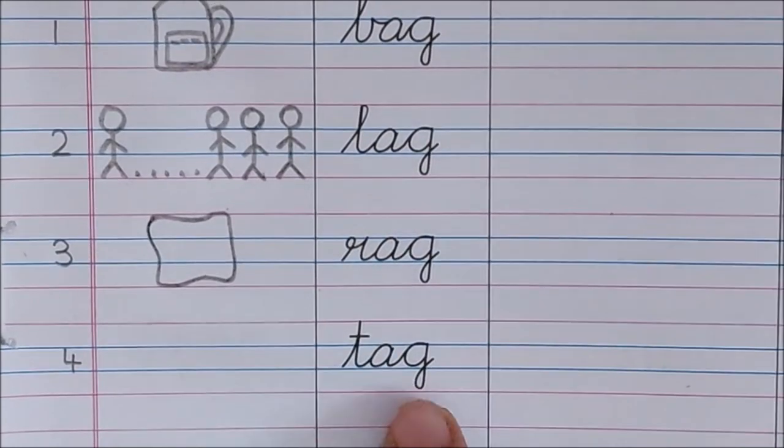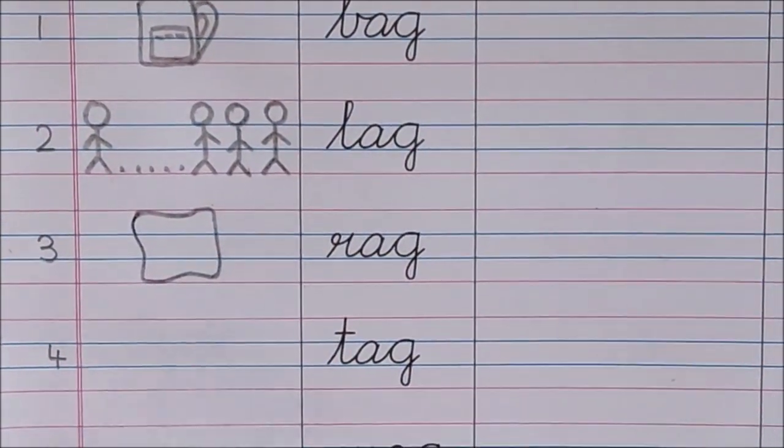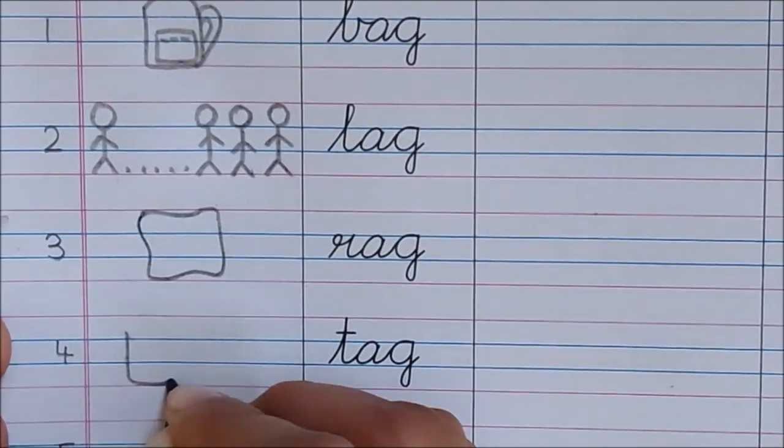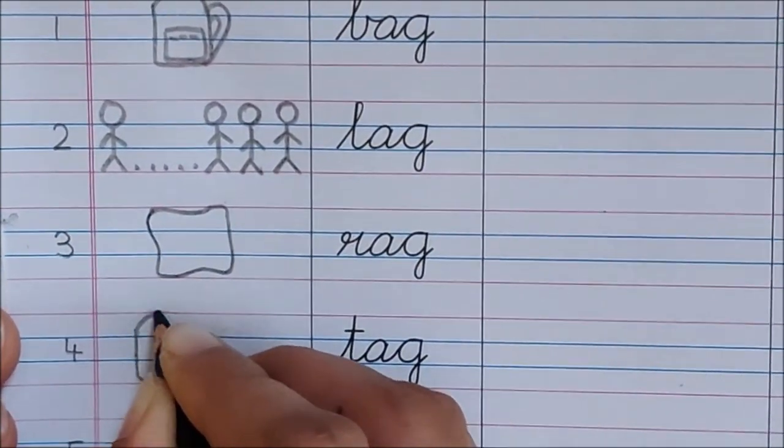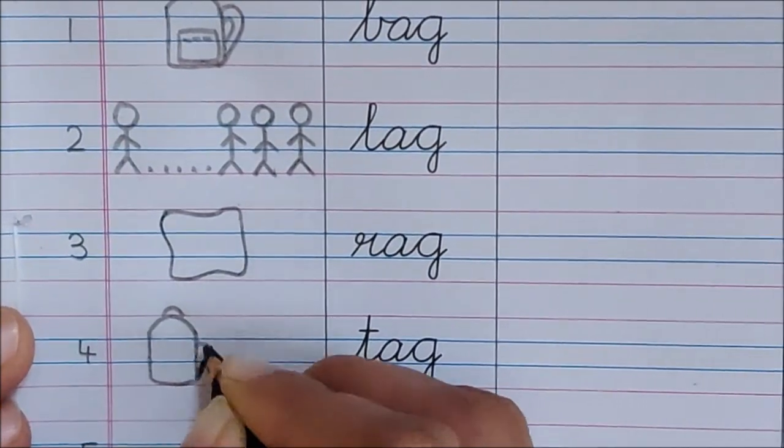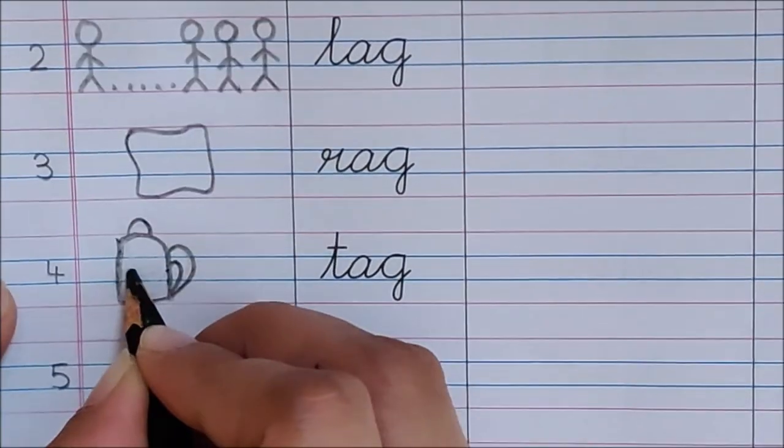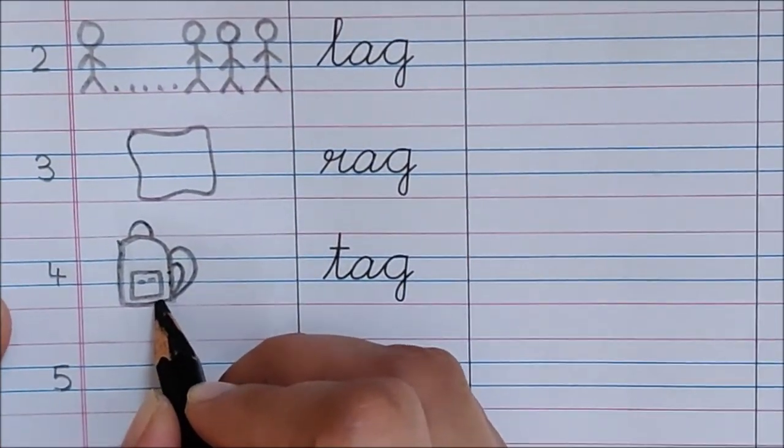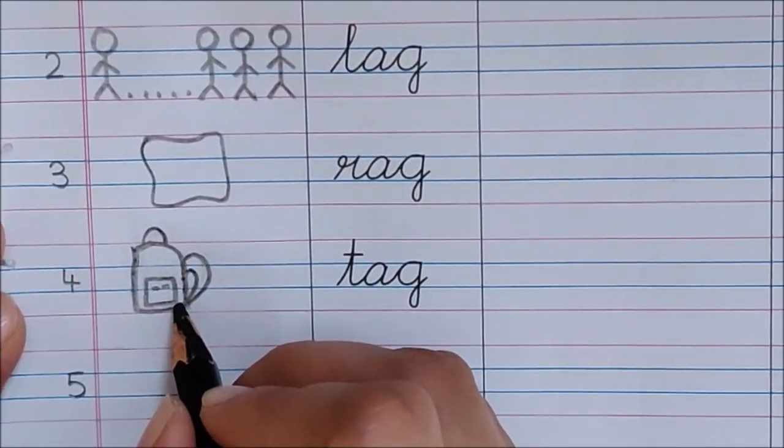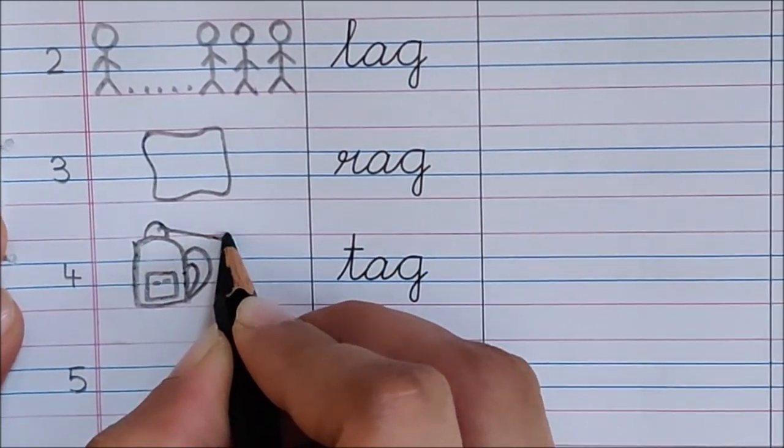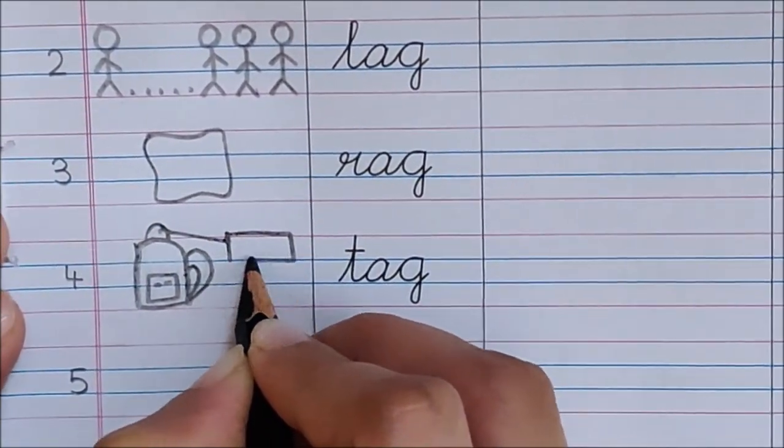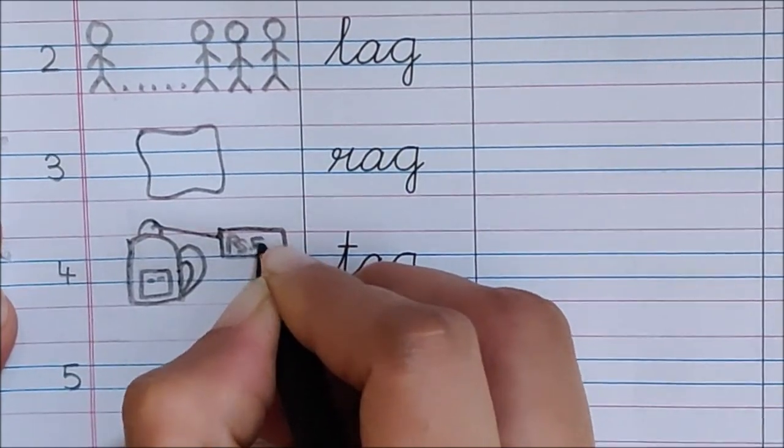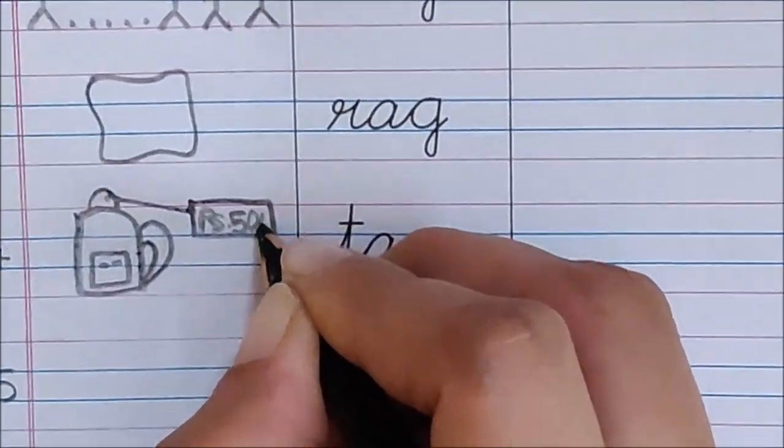Now let us read the next word. Ta, ag, ga, tag. Your mama went for shopping. She wanted to buy a bag for you. This is a bag. She saw a beautiful bag for you. It has a pocket also. Now, mama decided to buy this bag for you. She wanted to know the price of this bag. So, what did she do?